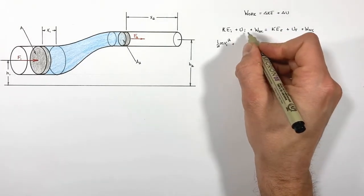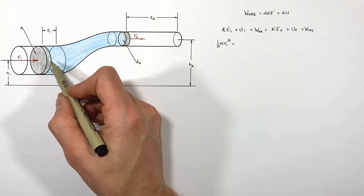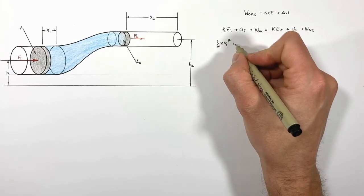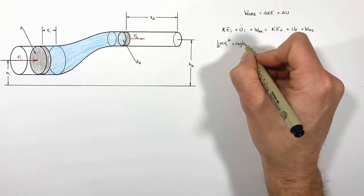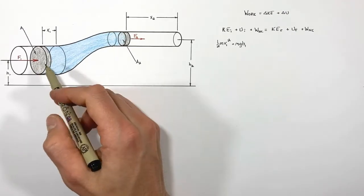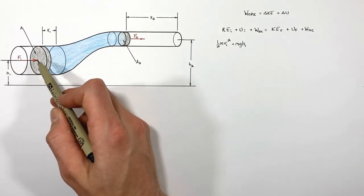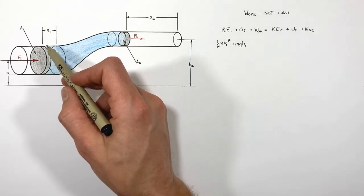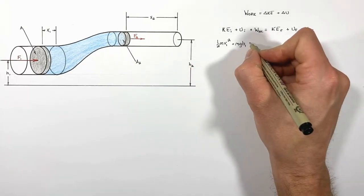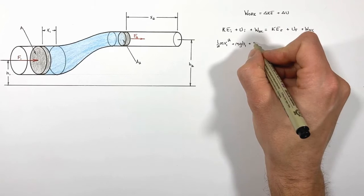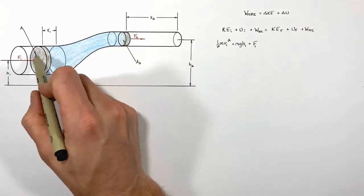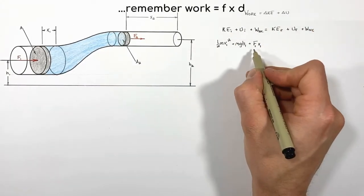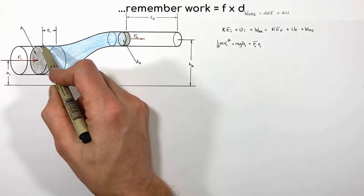Moving on to potential energy: that particle of fluid has some height h₁, so its gravitational potential energy is simply mgh₁. As the particle is pushed forward by the piston, which has some force on it, we're doing work on that fluid. Looking at all the fluid in front of the piston, there is a total force F₁ acting over some distance x₁ — this is the work done on the fluid immediately in front of the input piston.